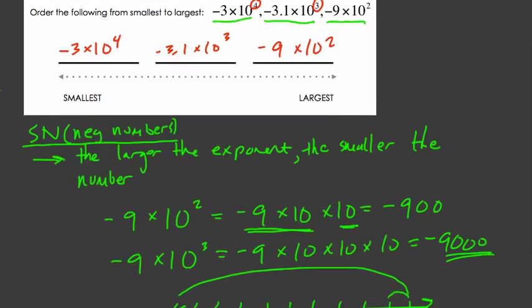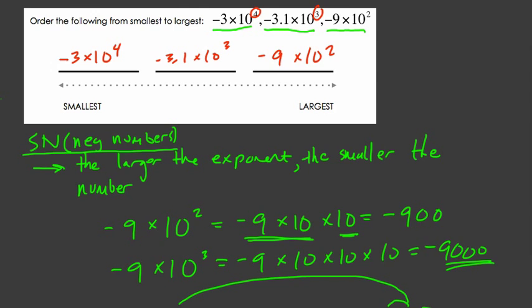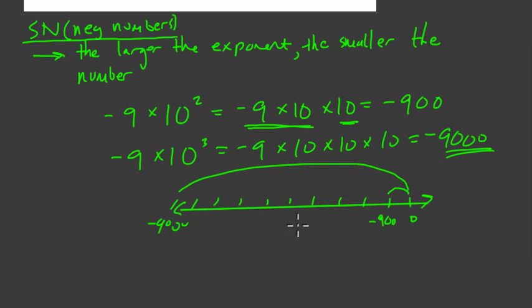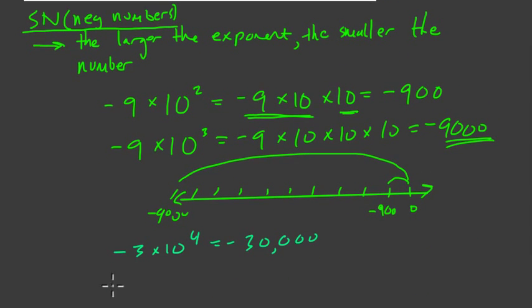Just to confirm that, you can write them all in standard form. So we have negative 3 times 10 to the 4th, that would be negative 30,000, if we multiply negative 3 by 10 four times. Then we have negative 3.1 times 10 to the 3rd, that would get us negative 3,100.